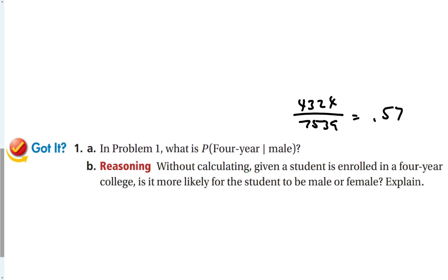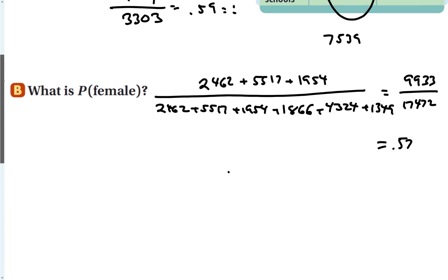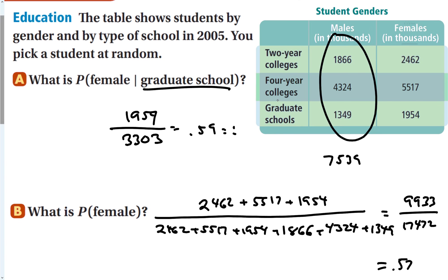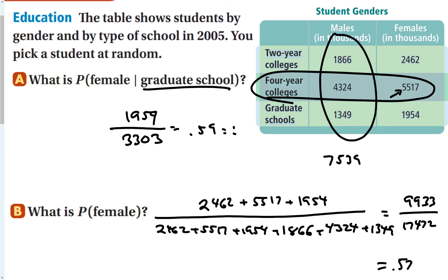For the reasoning part: given a student is enrolled in a four-year college, is it more likely for the student to be male or female? Looking at the table, given that they're in a four-year college, it's more likely to be a female because there are more females who go to four-year colleges. Our contingency table can really help us when we're finding one thing given another thing has already happened.